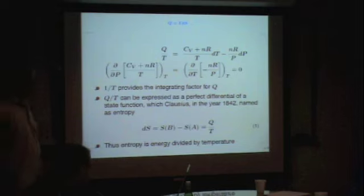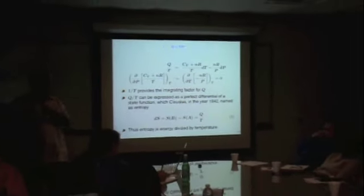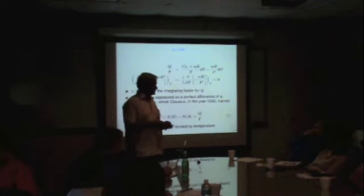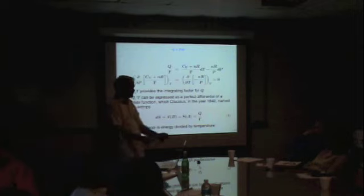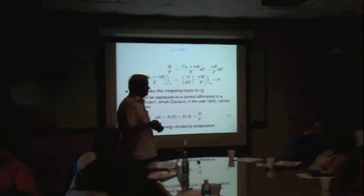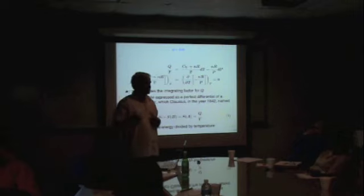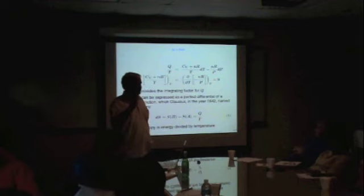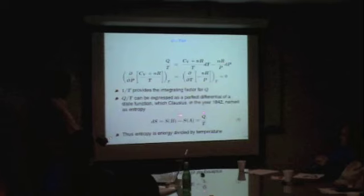Entropy is energy divided by temperature. It took a very long time to recognize that temperature is another way of measuring energy. So the change in entropy is energy divided by energy — it's a dimensionless quantity. Boltzmann captured this very simply and said entropy is K log omega, where omega is the number of microstates. So entropy is a dimensionless quantity. But in thermodynamics it has been defined as joules per Kelvin, and we introduce the Boltzmann constant to bridge the statistical mechanical entropy and thermodynamic entropy.